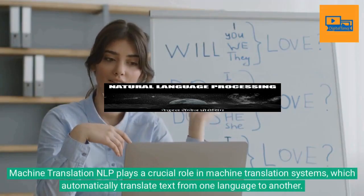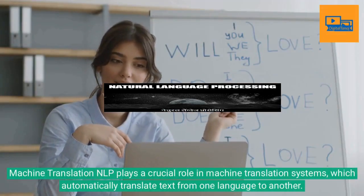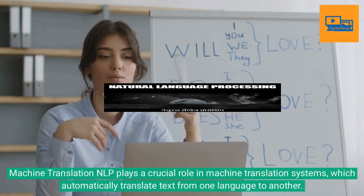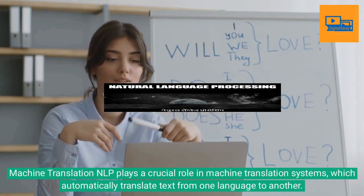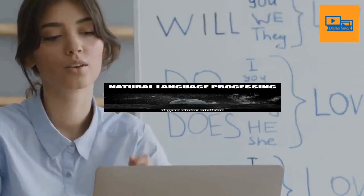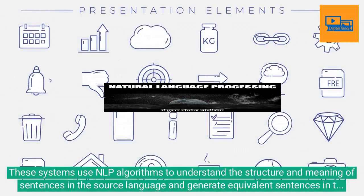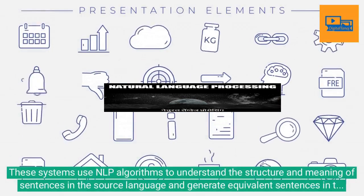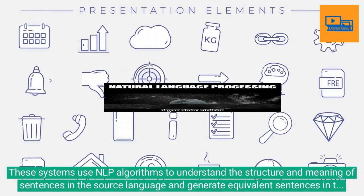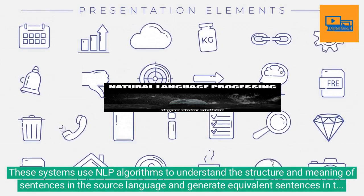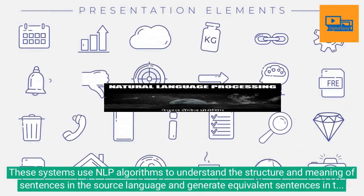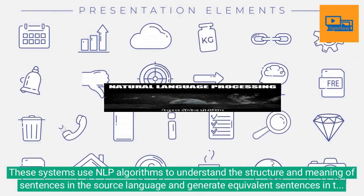Machine Translation: NLP plays a crucial role in machine translation systems, which automatically translate text from one language to another. These systems use NLP algorithms to understand the structure and meaning of sentences in the source language and generate equivalent sentences in the target language.